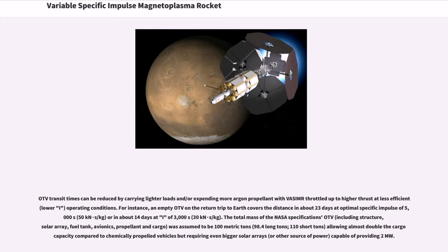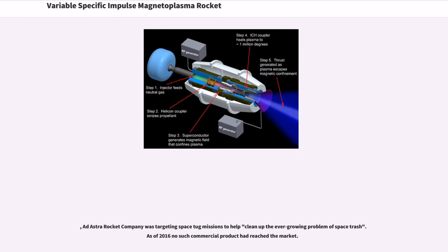OTV transit times can be reduced by carrying lighter loads and/or expending more argon propellant with VASIMR throttled up to higher thrust at less efficient operating conditions. For instance, an empty OTV on the return trip to Earth covers the distance in about 23 days at optimal specific impulse of 5000 seconds or in about 14 days at Isp of 3000 seconds. The total mass of the NASA specifications OTV was assumed to be 100 metric tons, allowing almost double the cargo capacity compared to chemically propelled vehicles but requiring even bigger solar arrays capable of providing 2 megawatts. Ad Astra Rocket Company was targeting space tug missions to help clean up the ever-growing problem of space trash. As of 2016, no such commercial product had reached the market.